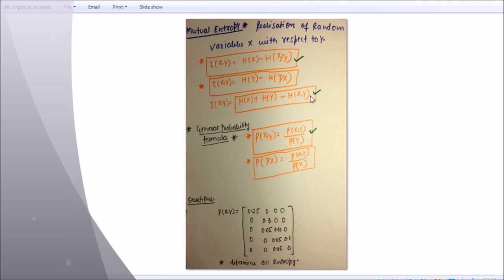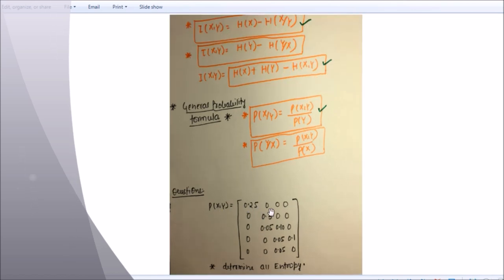The important formula: I(X;Y) is equal to H(X) plus H(Y) minus H(X,Y). And the general probability formulas: p(x|y) is equal to p(x,y) divided by p(y), and p(y|x) is equal to p(x,y) divided by p(x). Now let's see the question, because without a question you can't fully memorize or understand these formulas. Here p(x,y) is given as 0.25, 0.30, 0, 0, 0.05, 0.1, 0, 0.17, 0, 0, 0.05.